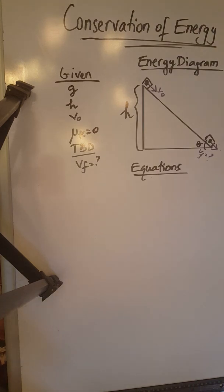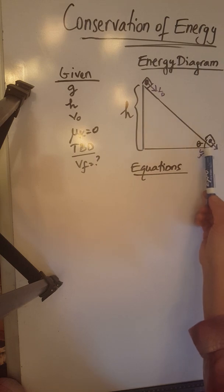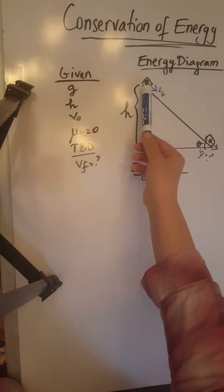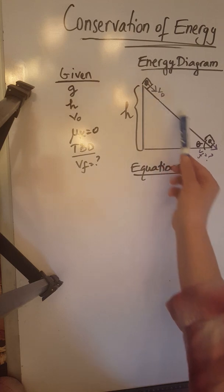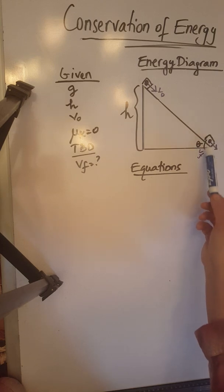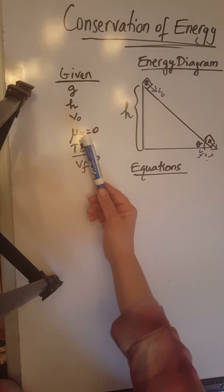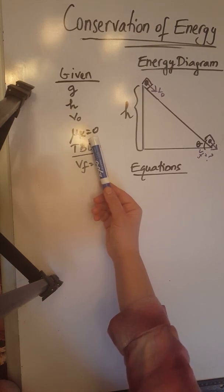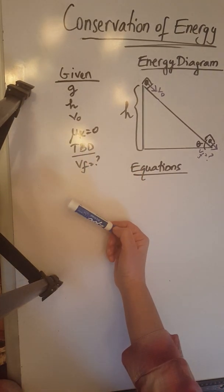Hello everyone. This is our second conservation of energy problem, in which we have an object on the top of a ramp of inclination theta and height h. It's already moving at the top of that ramp with an initial velocity V₀. It's moving down the ramp and will obviously accelerate, and we need to calculate the final velocity — the magnitude of the velocity — as it reaches the bottom of the ramp. This ramp is smooth, no friction. Given are g, h, and V₀; to be determined is Vf.